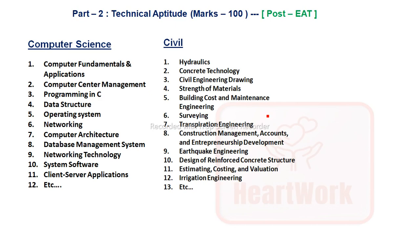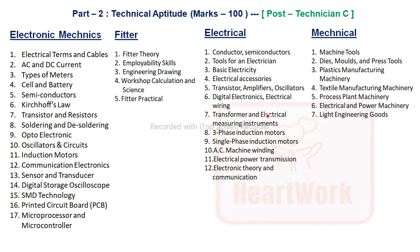For Technician C, there are also 100 questions. The four branches being recruited this time are Electronics, Mechanics, Fitter, Electrical, and Mechanical. The syllabus covers respective branch topics. Questions will be easy to moderate level, and numerical questions will also come — not too hard, just apply the formula and get the answer.